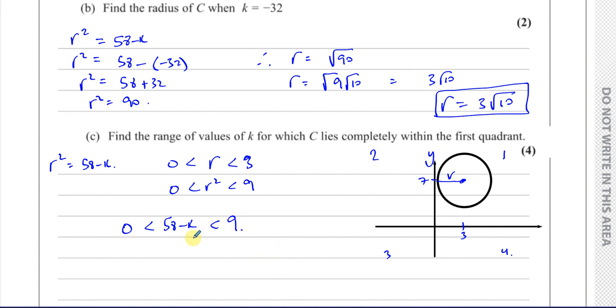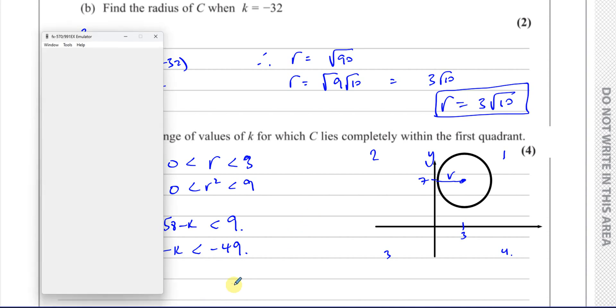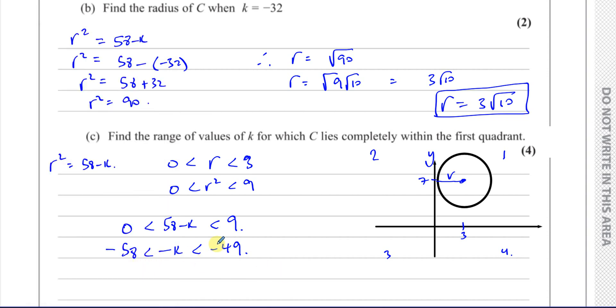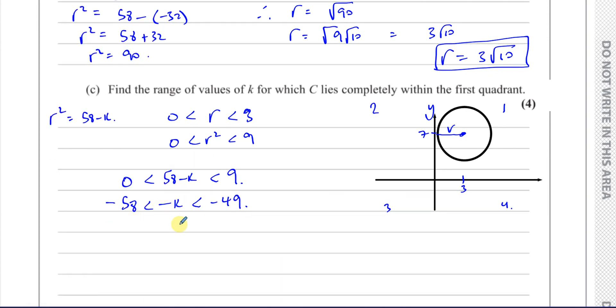If we solve this inequality, I can subtract 58 from both sides. So 9 - 58 is -49. Now because there's a negative in front of k and we want a positive k, we've got to divide the whole inequality by -1. When we divide an inequality by a negative number or multiply by a negative number, we have to change the direction of all the inequality signs.